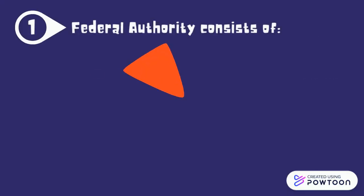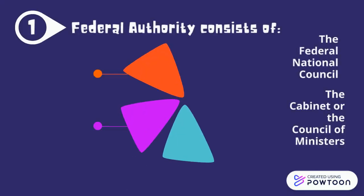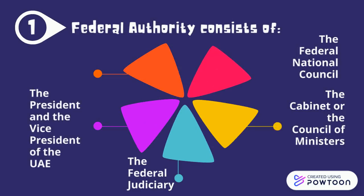The federal authority consists of the Federal Supreme Council, the President and the Vice President of the UAE, the Federal National Council, the Cabinet or the Council of Ministers, and the Federal Judiciary.